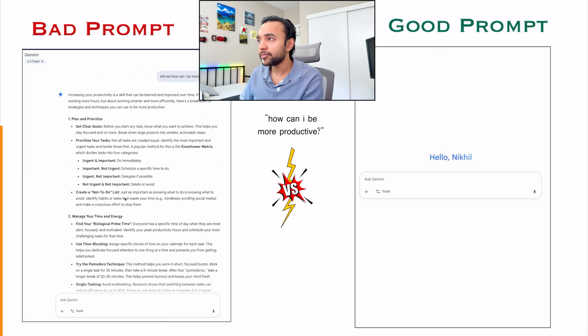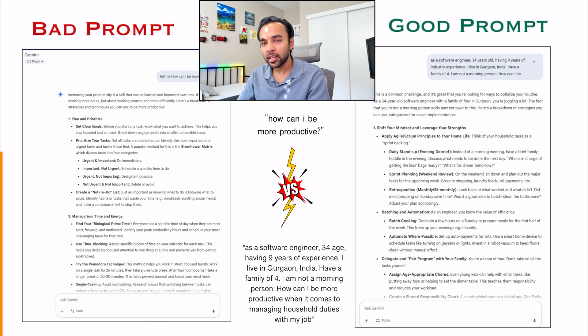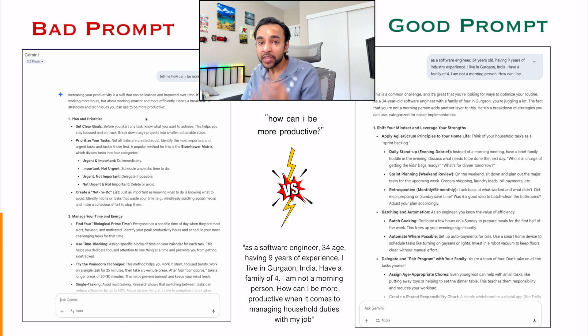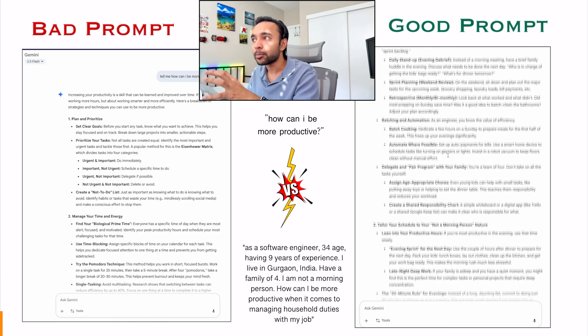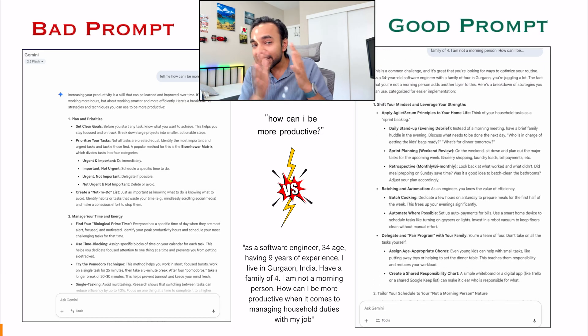Whereas what does a good prompt look like? Notice the difference — in a bad prompt, your response is very generalized. The chat model doesn't know anything about you. But on the right, I have told a lot of information: my role, my age, where I live, and my current situation. So this response is particularly more helpful for you. That is the difference between a good prompt versus a bad prompt. I am using the same AI model, but I get a different answer because I have given it more information.